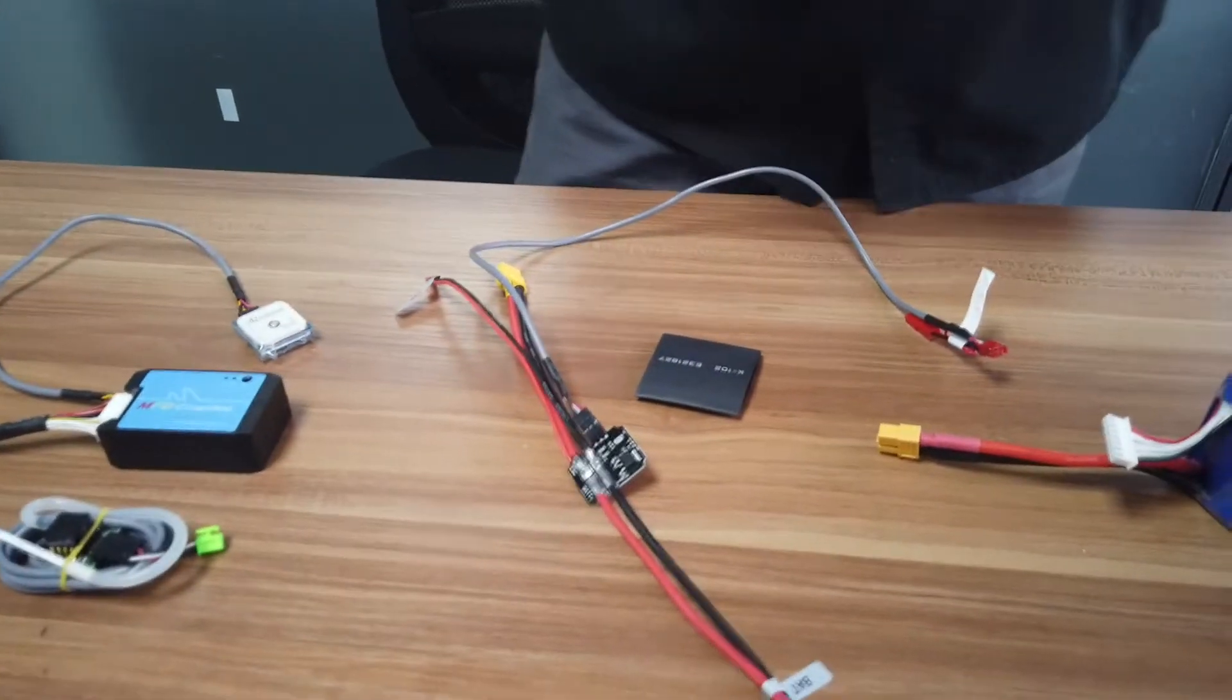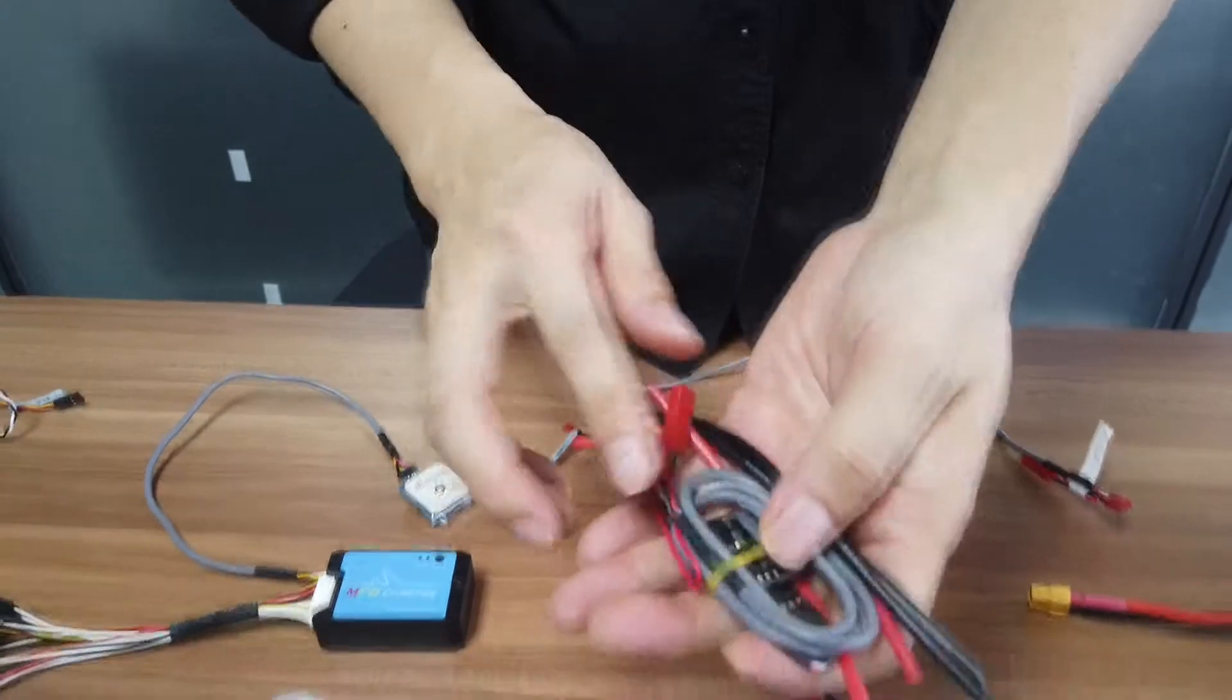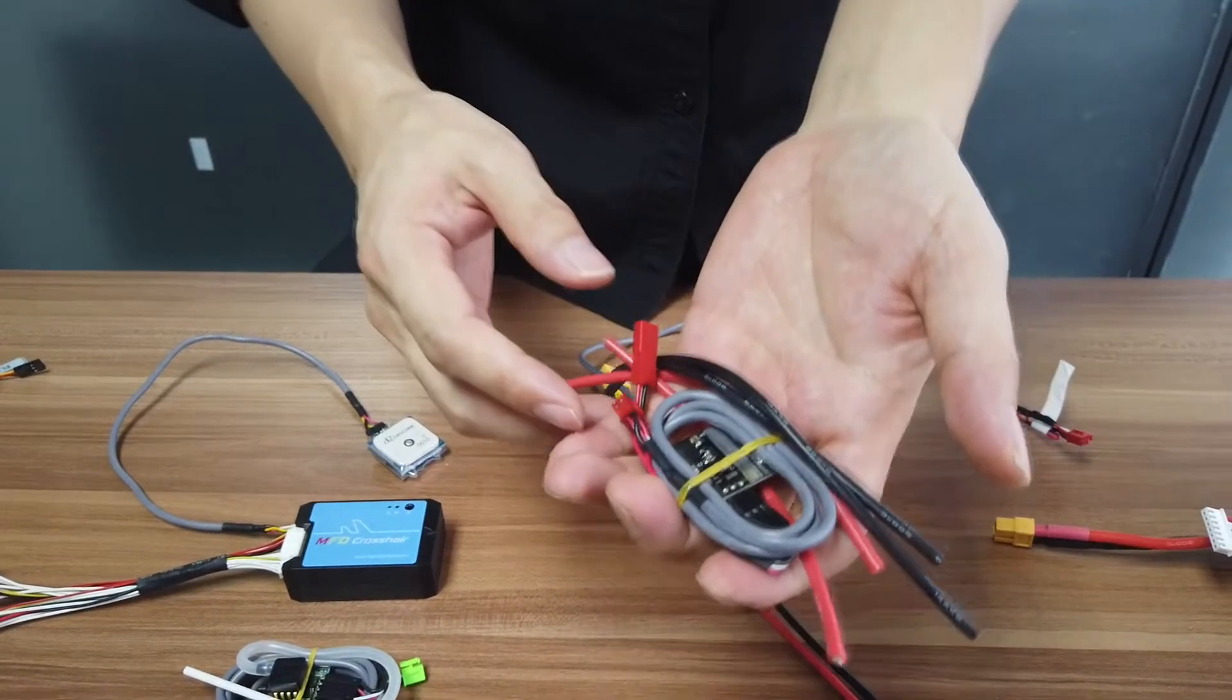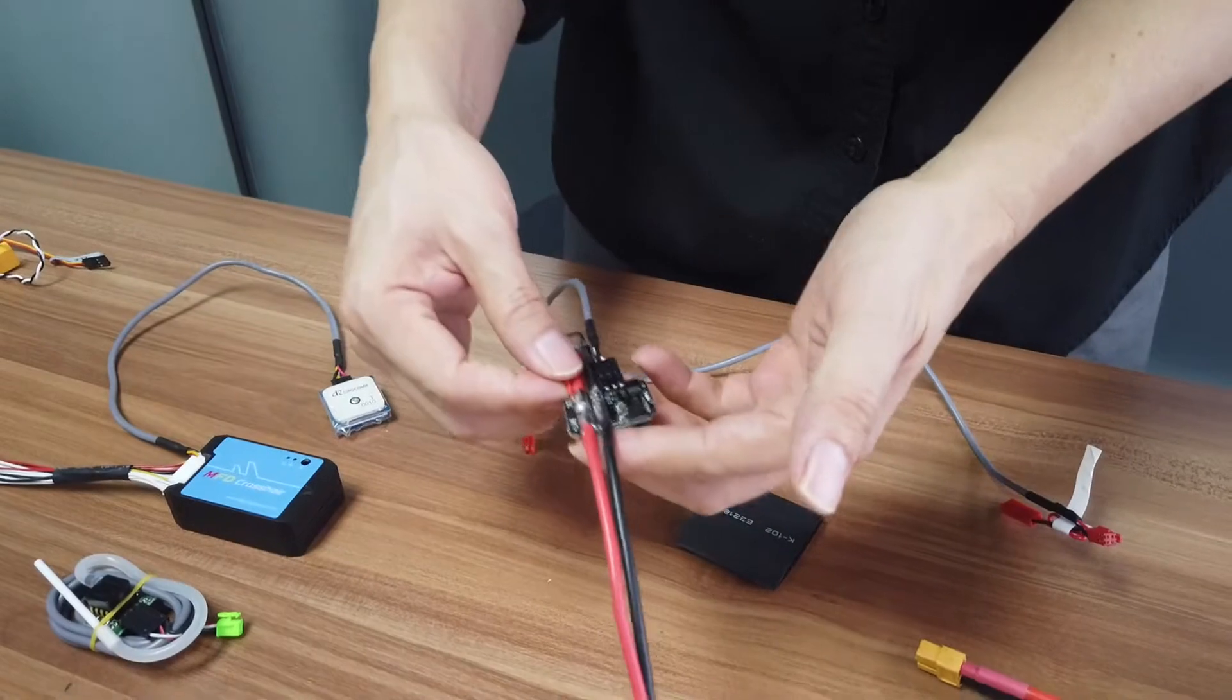So the current sensor is already pre-soldered? No, this is what you get from the box. Right. And in this case, we solder this cable to save time.